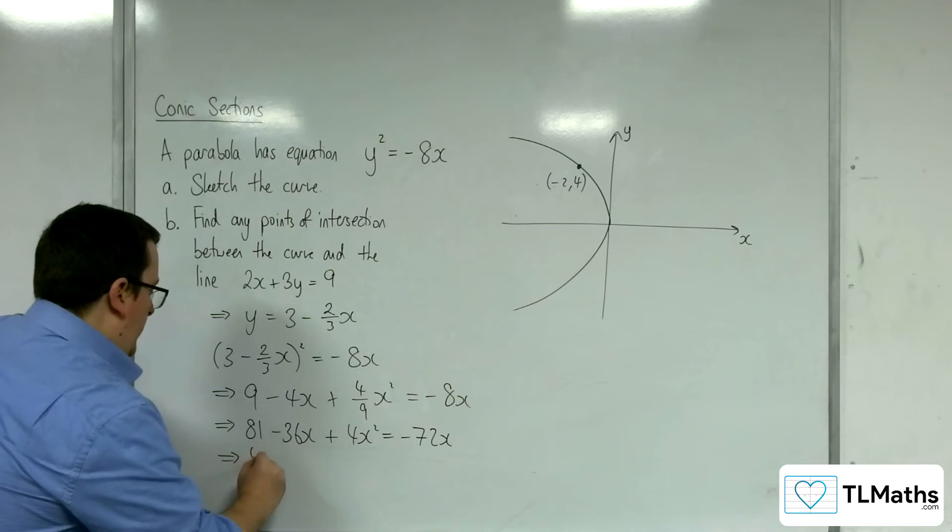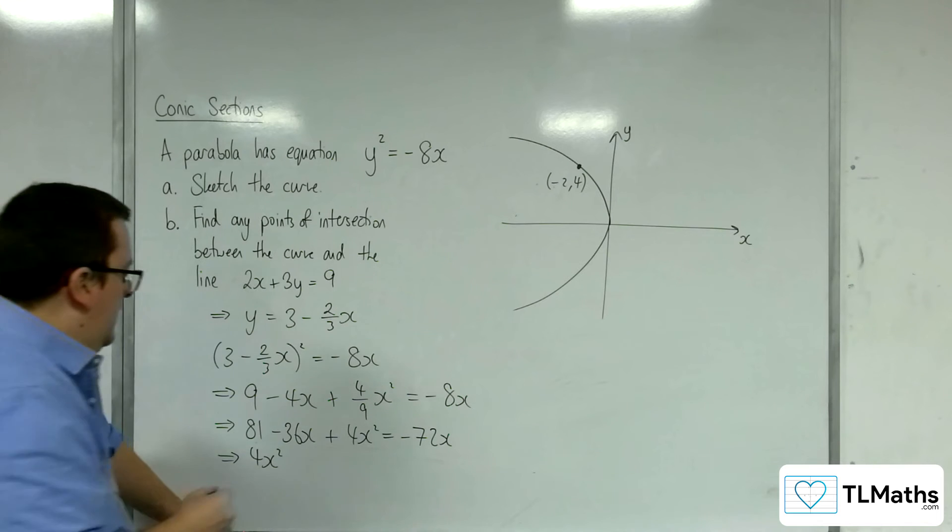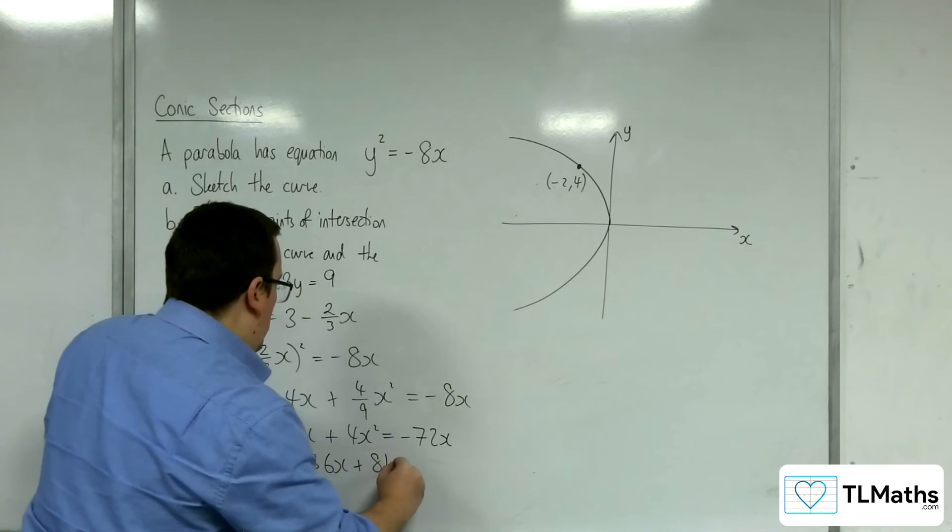So we have 4x squared, so minus 36x plus 72x will be plus 36x. We've got the plus 81.